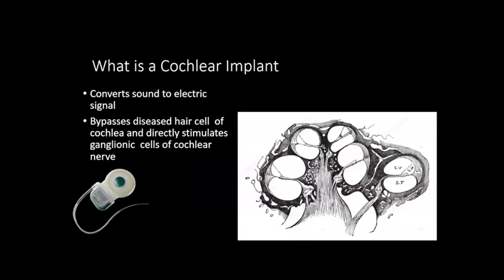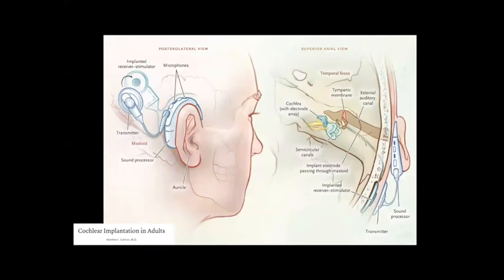A cochlear implant is a device that converts sound to an electrical signal. It bypasses the diseased hair cells of the cochlea and directly stimulates the ganglionic cells of the cochlear nerve. It has an external component comprised of a microphone, sound processor, and transmitter, and an internal component comprised of the cochlear implant magnet (also known as the receiver stimulator complex) and an electrode array which enters the inner ear through the mastoid air cells and the round window into the cochlea. The external and internal components are magnetically connected.